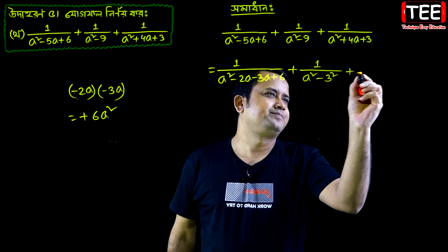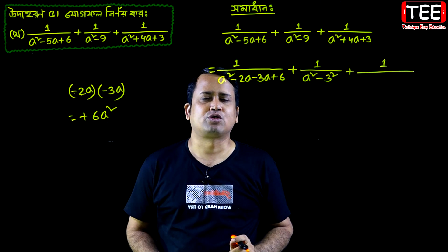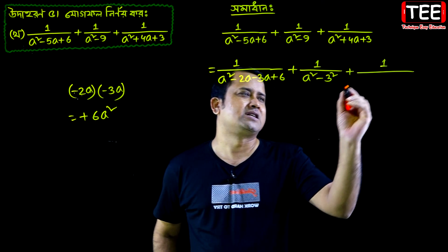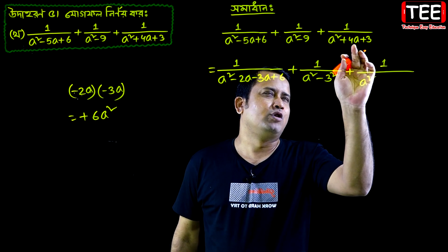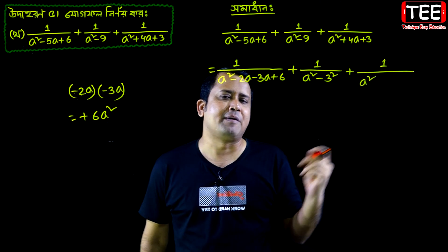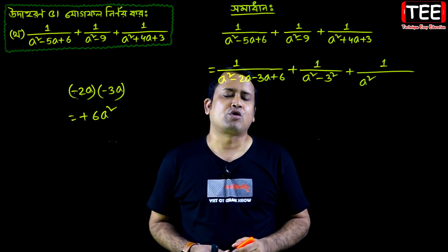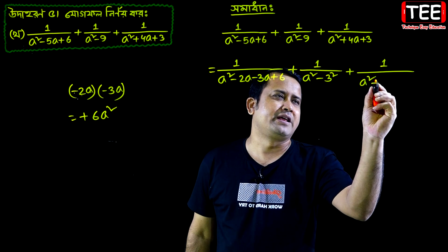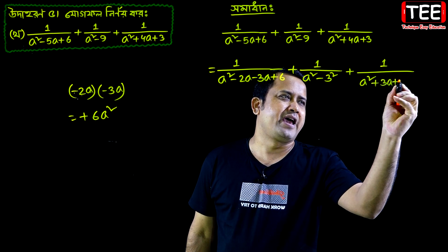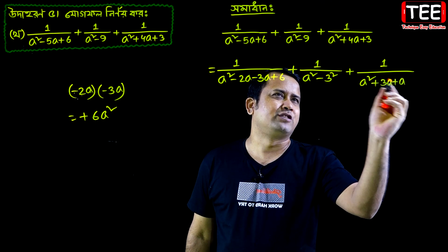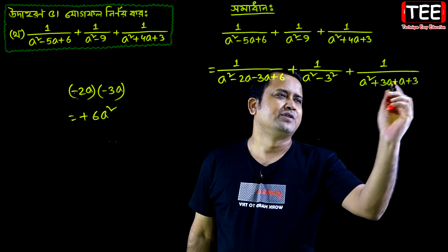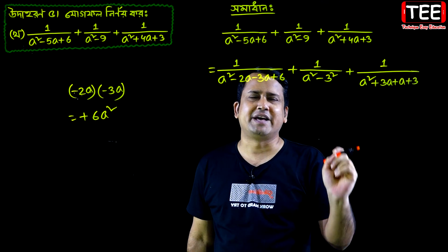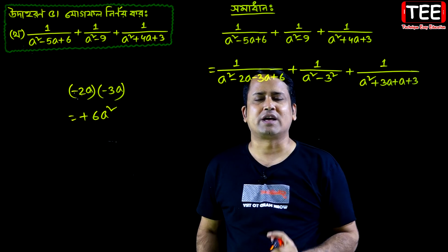Plus. We will use the middle term. We will use the middle term so that we use 3a plus a. 3a square — 3a square plus 3a square.